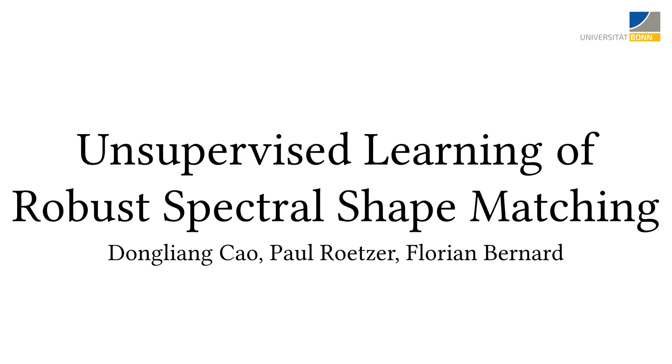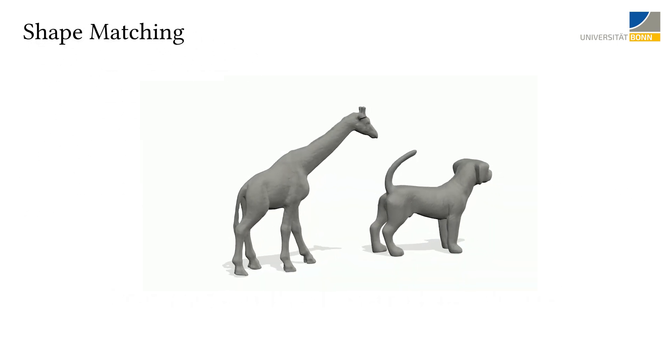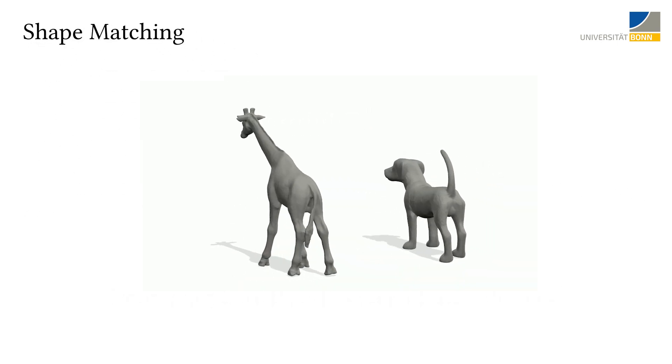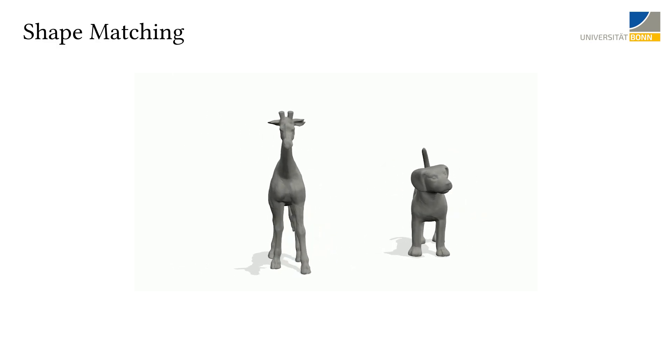We present unsupervised learning of robust spectral shape matching. We consider shape matching as the task of finding correspondences between two non-rigidly deformed 3D shapes in the form of triangle measures.